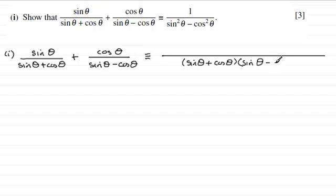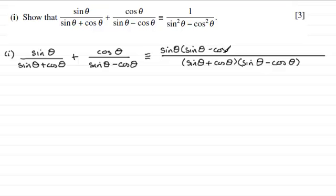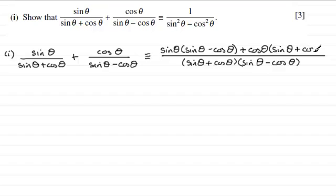So we put that in as the denominator: (sine theta plus cos theta)(sine theta minus cos theta). To get that denominator for the first fraction, we multiply top and bottom by (sine theta minus cos theta), giving sine theta times (sine theta minus cos theta). For the second fraction, we multiply top and bottom by (sine theta plus cos theta), giving plus cos theta times (sine theta plus cos theta).